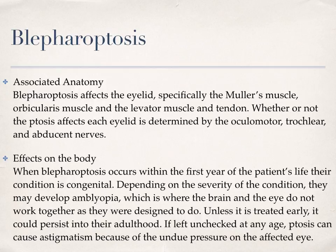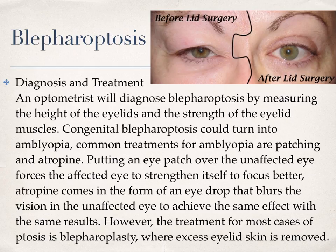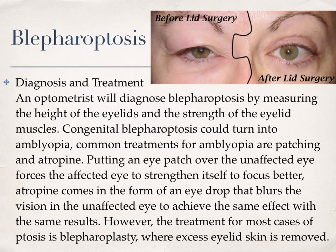Effects on the body: When blepharoptosis occurs within the first year of the patient's life, their condition is congenital. Depending on the severity, they may develop amblyopia, where the brain and the eye do not work together as they were designed to do. Unless it is treated early, it could persist into adulthood. If left unchecked at any age, ptosis can cause astigmatism because of the downward pressure on the affected eye. An optometrist will diagnose blepharoptosis by measuring the height of the eyelids and the strength of the eyelid muscles. Common treatments for amblyopia are patching and atropine — putting an eye patch over the unaffected eye forces the affected eye to strengthen and focus better. Atropine comes in the form of eye drops that blur the vision in the unaffected eye to achieve the same effect. The treatment for most cases of ptosis is blepharoplasty, where the excess eyelid skin is removed.